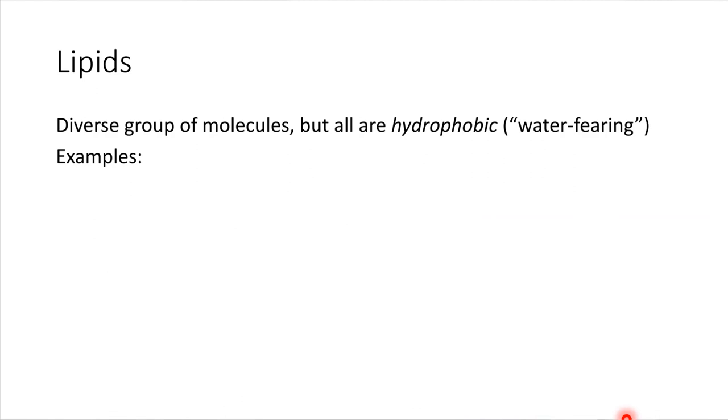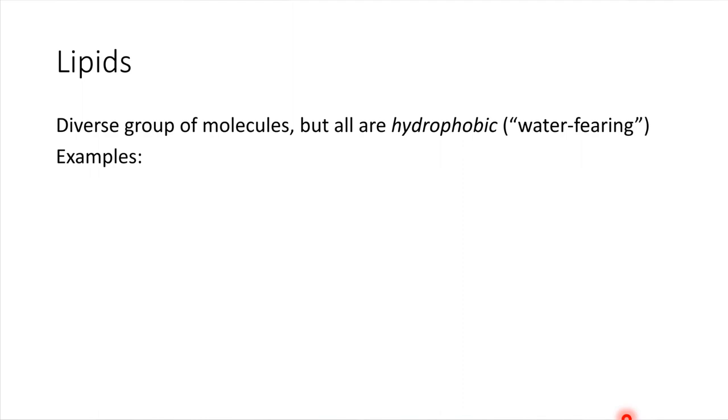Another good example of a lipid - this is a different category of lipid, but it's still a hydrophobic molecule - would be steroids. The thing that's really characteristic about steroids is that they have a ring structure. They have one, two, three, four - four carbon rings.